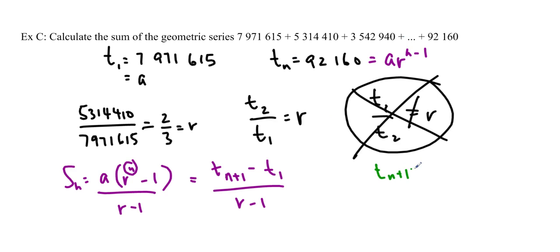So I'm going to go ahead and do that. I know that t sub n plus 1 is going to be r times t sub n. And I know t sub n and I know r. It's two-thirds times 92,160, which ends up being, if you use your calculator, 61,440.